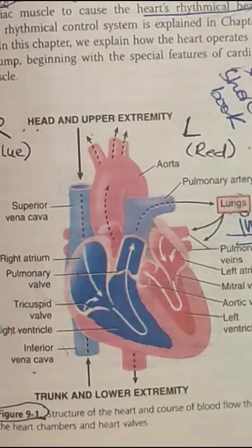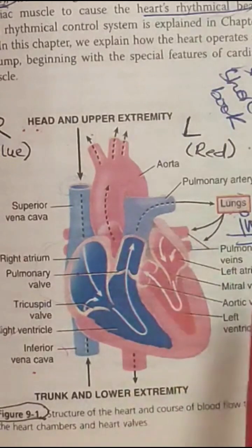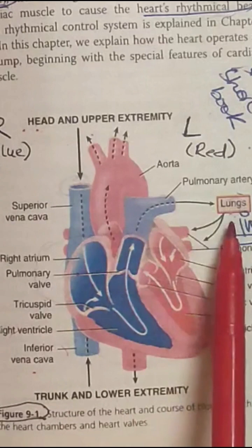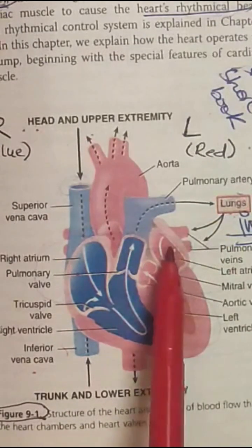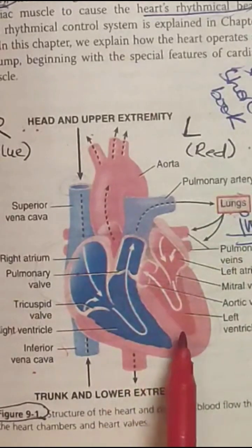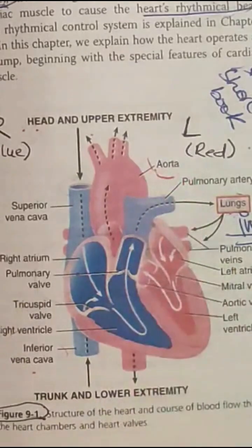In the lungs, this deoxygenated blood is oxygenated and carbon dioxide is released. That oxygenated blood then travels from the lungs through the pulmonary vein into the left atrium, passing through the mitral valve into the left ventricle, and then through the aorta it is distributed to the rest of the body.